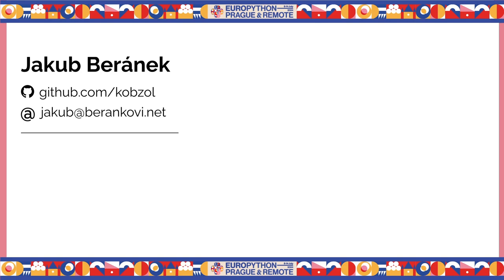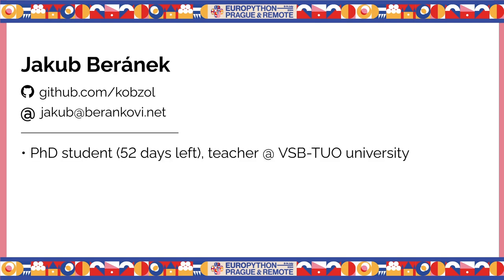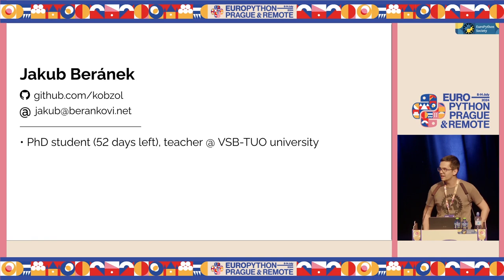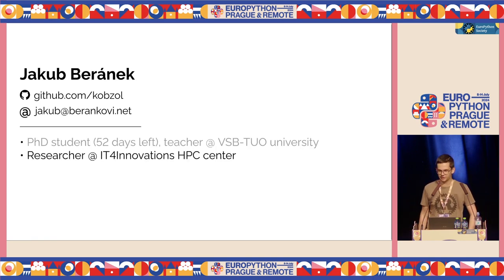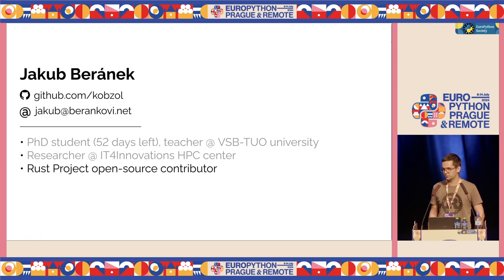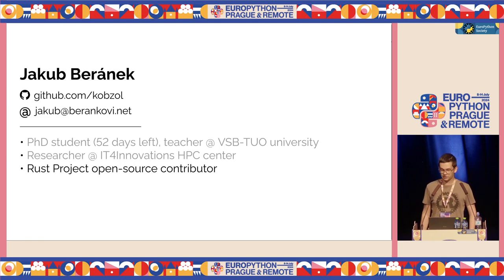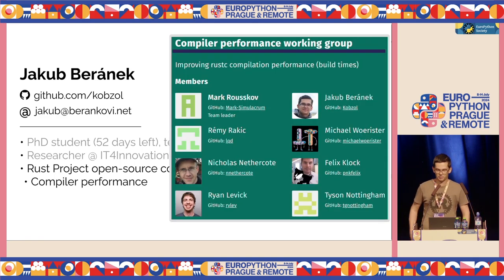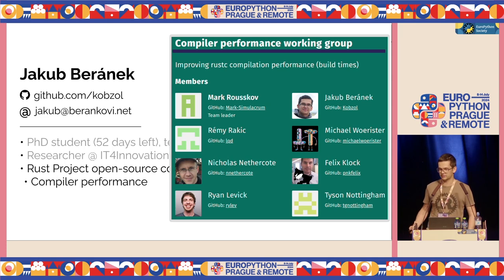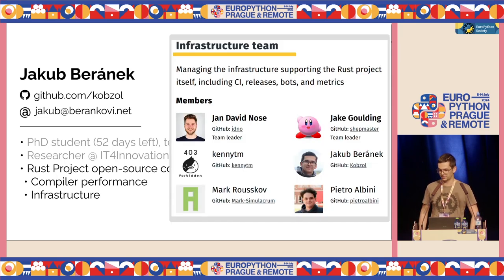My name is Jakub Beranek. I'm a computer science PhD student with about two months left, so wish me luck. I teach at a university, I work as a researcher at the Supercomputing Center, and I also like to contribute to open source — mostly to the Rust project, where I'm a member of a few teams that work on compiler performance and the Rust infrastructure.